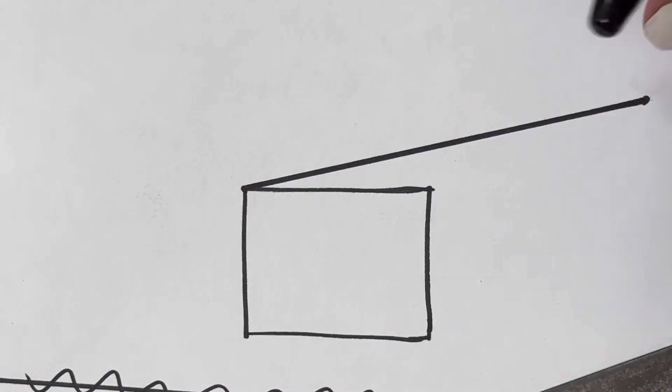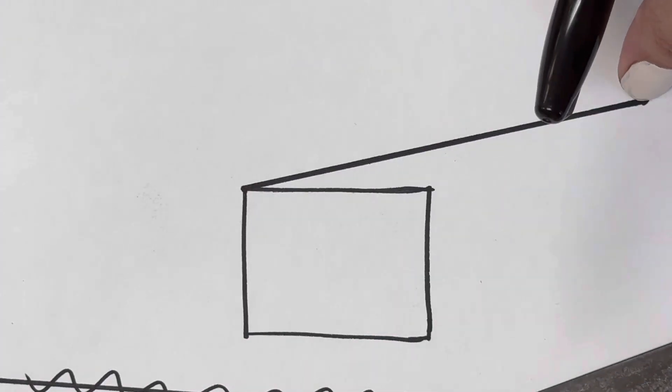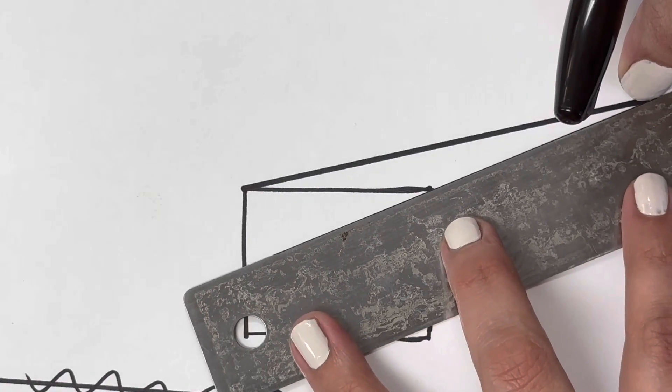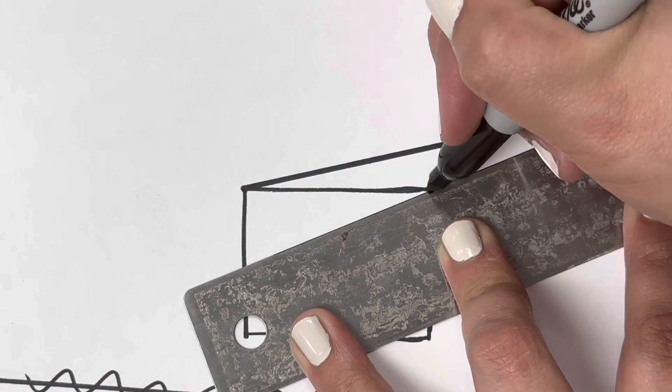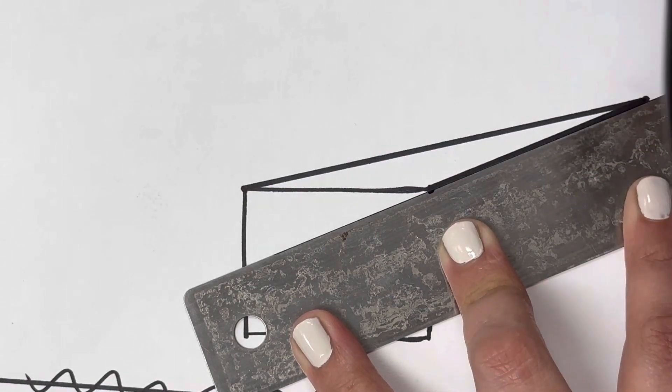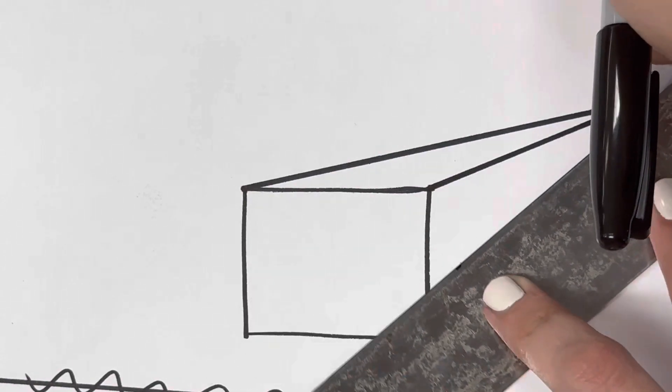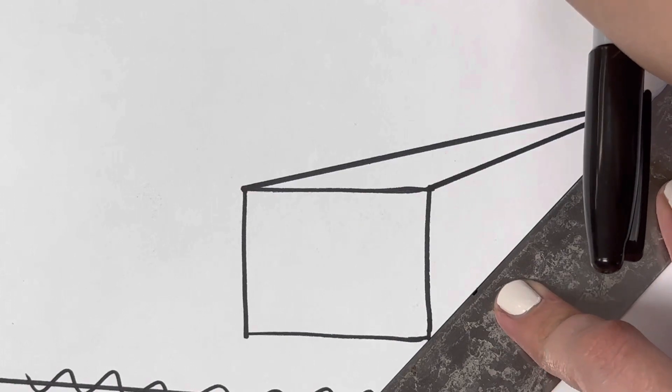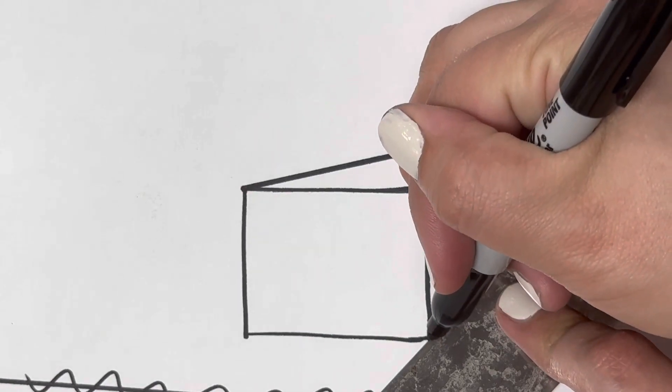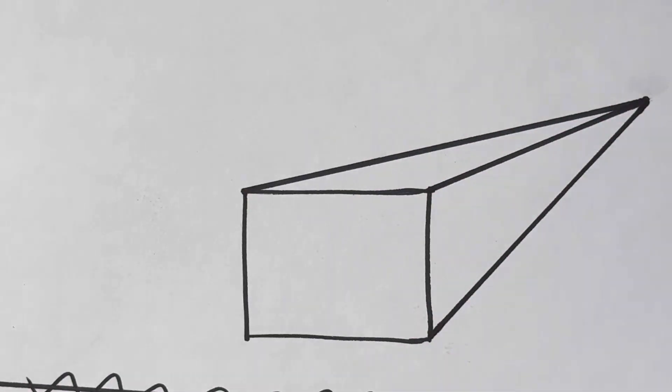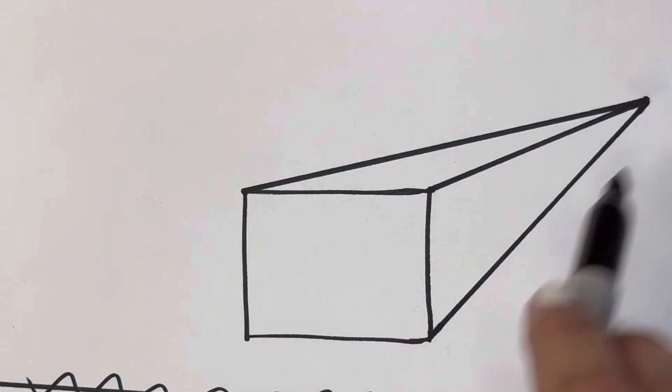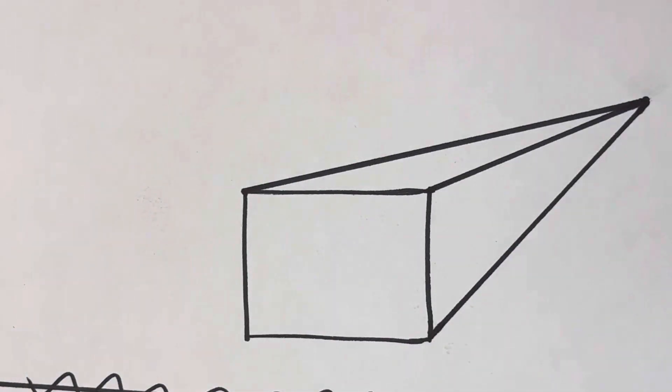I'll show you two more times. Put my thumb on that point that I want it to connect to and move my ruler so it's exactly where I want it and then connect. Sometimes my ruler will jump a little bit; if it does that just reset it. Right there I know that my lines are going to be pretty much exactly to the vanishing point.